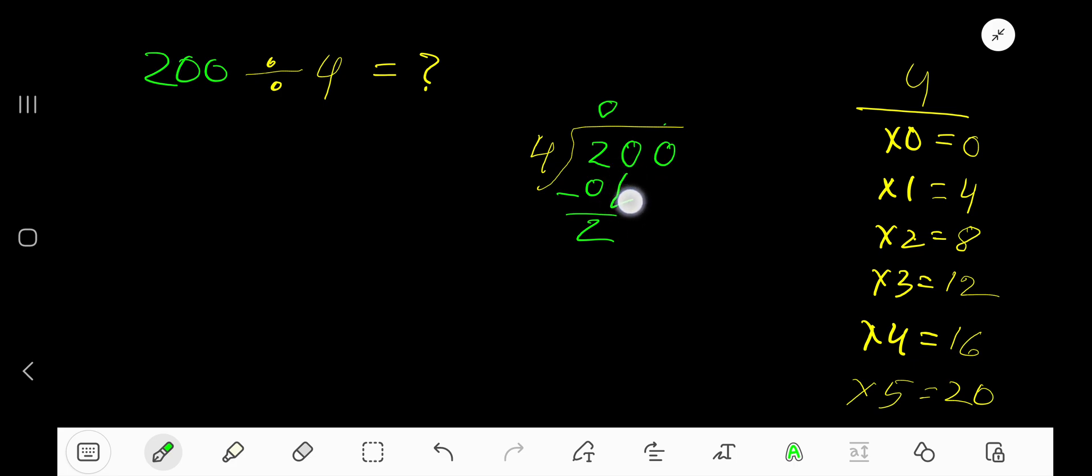Bring down this 0. 4 goes into 20 how many times? 4 goes into 20 five times. 5 times 4 is 20. Subtract, we get 0.